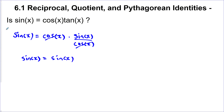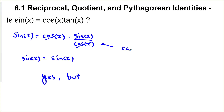So, is sine x equal to cos x times tan x? Yes, but we had a denominator on this side that we didn't have on this side. So on this side, we see that cos x cannot equal 0.